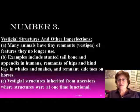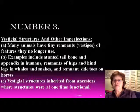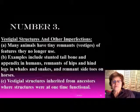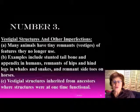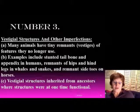I finished the last segment on vestigial structures, which is the number three evidence for evolution. Vestigial structures are tiny remnants that some animals have — we call them vestiges — which they don't use anymore. A good example is our own tailbone and our appendix. The tailbone is not used anymore, but if you fall on it, it's going to hurt really bad, so you wonder why we have that.